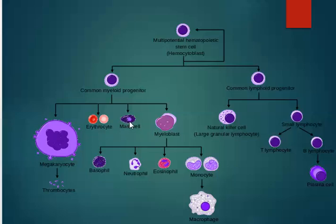We have a mast cell, and then the myeloblast, which gives rise to all of the 'phils' — the granulocytes. I use the mnemonic 'Phil likes granny' to remember this. The granulocytes are the basophils, which look like a blueberry bagel with a nucleus that fills the cell, and the neutrophils, which are the component of pus, with a nucleus separated into two or three pieces like beads on a string.